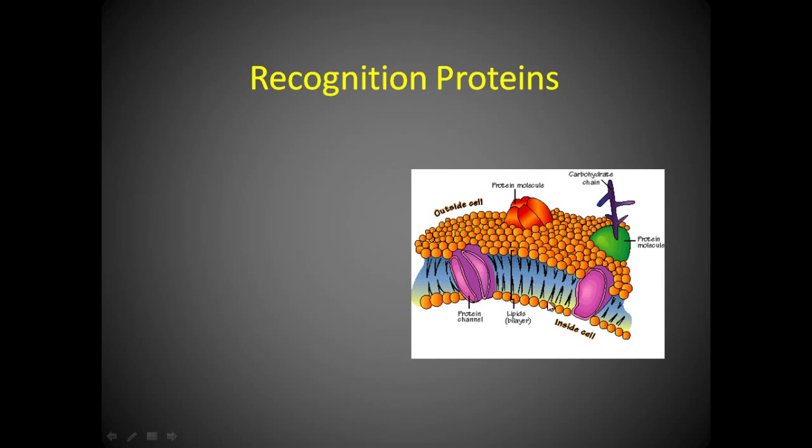We're going to talk about some of the proteins, the general protein types that you see on a cell membrane. The first one I want to talk about is what are called recognition proteins. The best way I can explain a recognition protein to you is if that's your cell membrane or my cell membrane, I have a unique signature of proteins on my cell membrane that tells my body that this cell is me, itself.